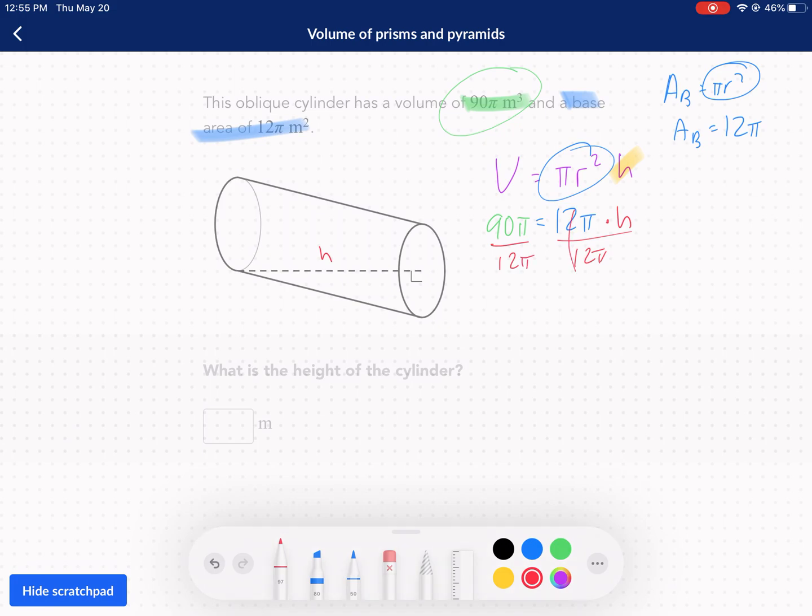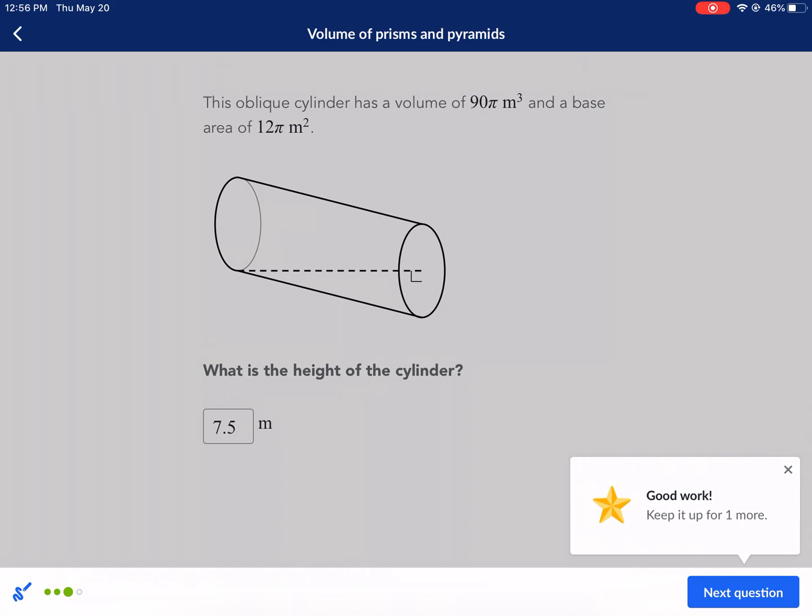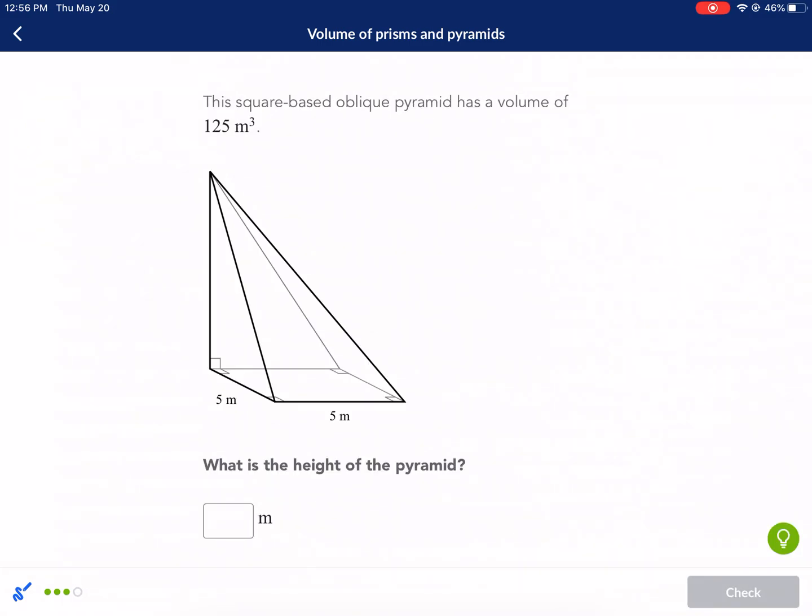That cancels out on that side, and then we have the pi's are going to cancel, and then we have 90 divided by 12. That does not go in evenly. So we have 90 divided by 12. It might be a 0.5, yep, it's equal to h. h equals 7.5. So 7.5 meters is the height between these two. It doesn't matter that it's an oblique. It has no effect on the volume of a cylinder.